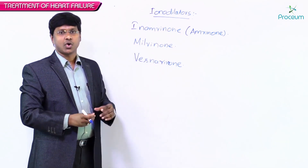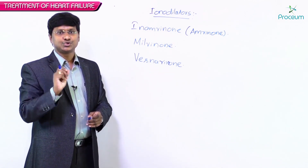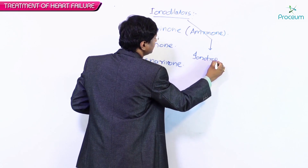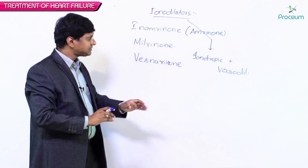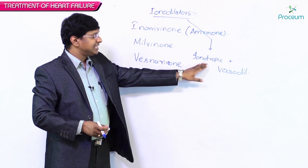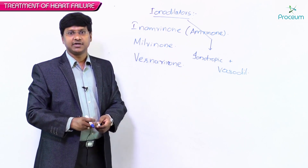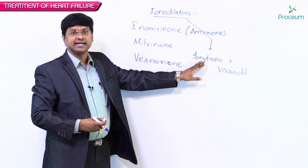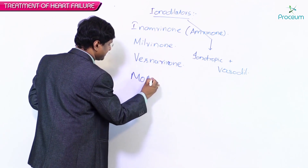These are called inodilators because they have two properties: the inotropic property and the vasodilatory property. Inotropicity means they increase the contractility of the myocardium. Now let's discuss how they increase myocardial contractility and cause vasodilatation — the mechanism of action of these drugs.